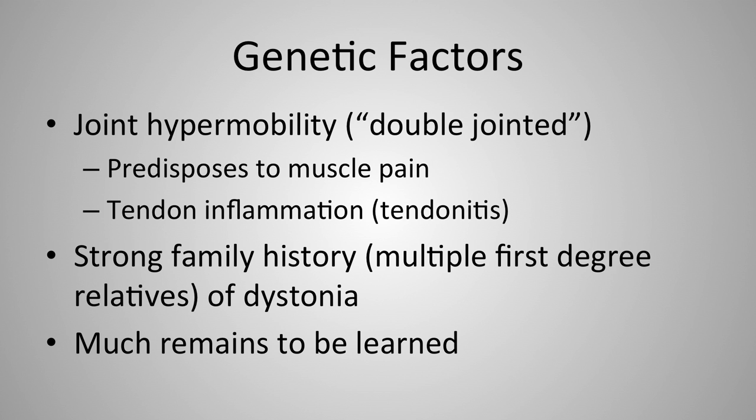Joint hypermobility — being double-jointed — is a contributing factor that could predispose musicians to muscle pain and tendinitis, as with my friend the pianist, who does happen to be double-jointed. A strong family history — multiple first-degree relatives with something like dystonia — makes one wonder about genetic predisposition. However, we have a lot to learn regarding the genetics of musicians' dystonia; it remains an active area of research.